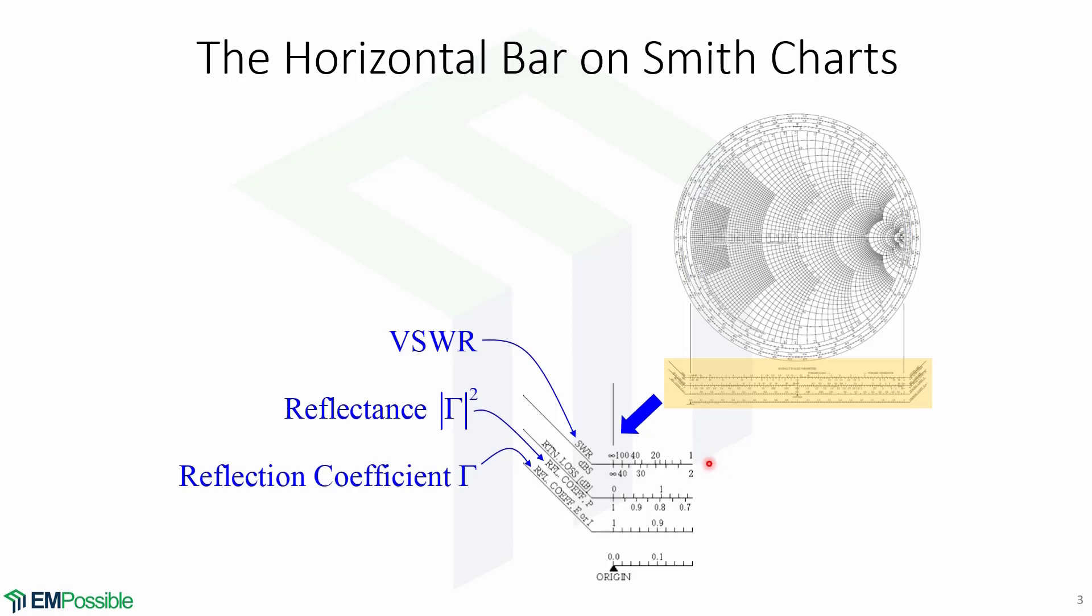In the top line in the upper half, the VSWR is shown here. In the middle line at the bottom half, the reflectance coefficient squared is shown here. And at the bottom line at the upper half, the reflection coefficient gamma is shown here.